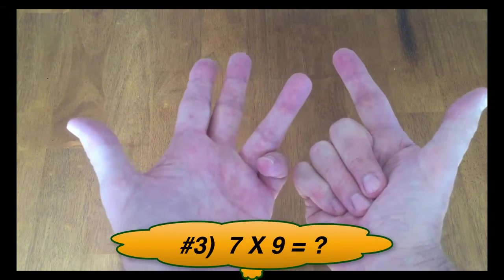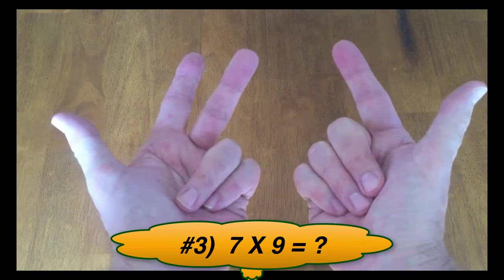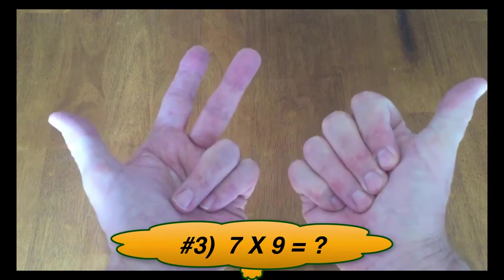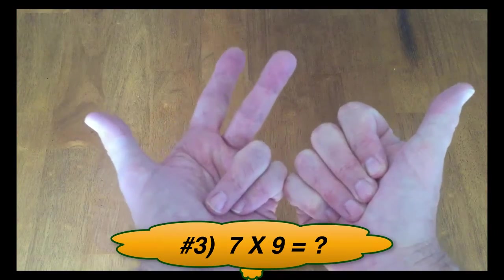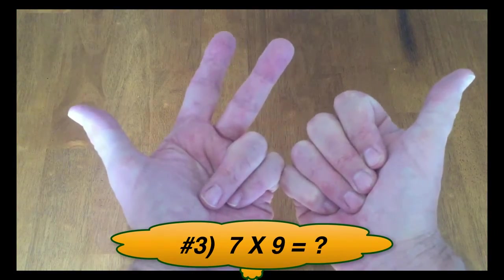And then let's do 7 times 9. So we've got 7 here and 9 would be represented with 4 fingers down. For 7 times 9, we put our hands together, we've got 6 fingers down. 6 times 10 is 60.